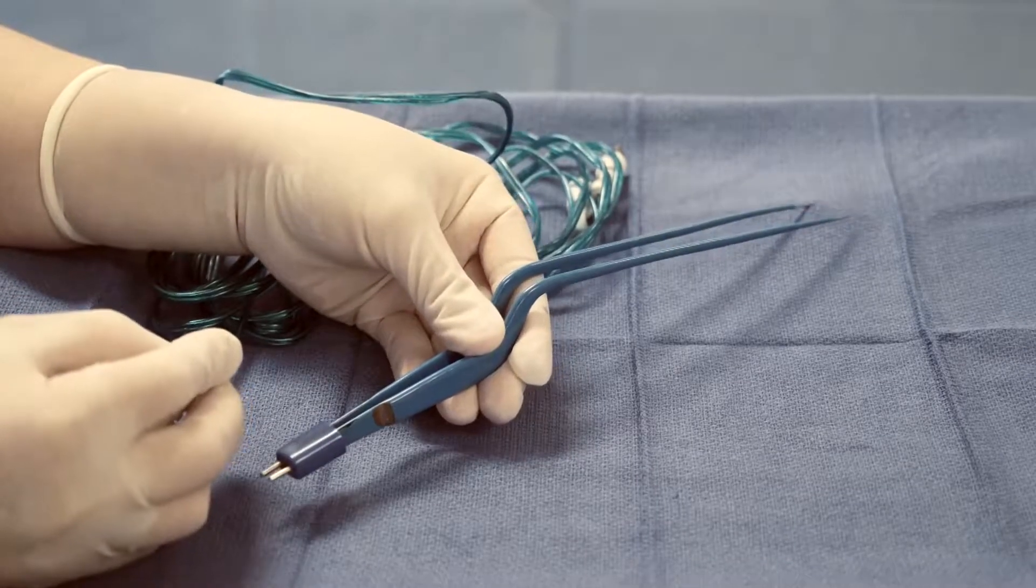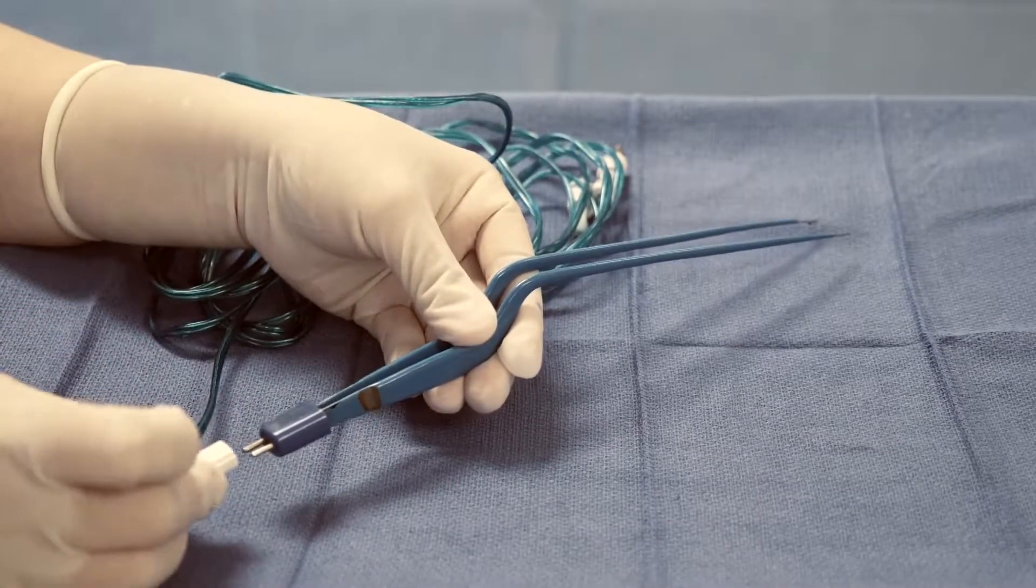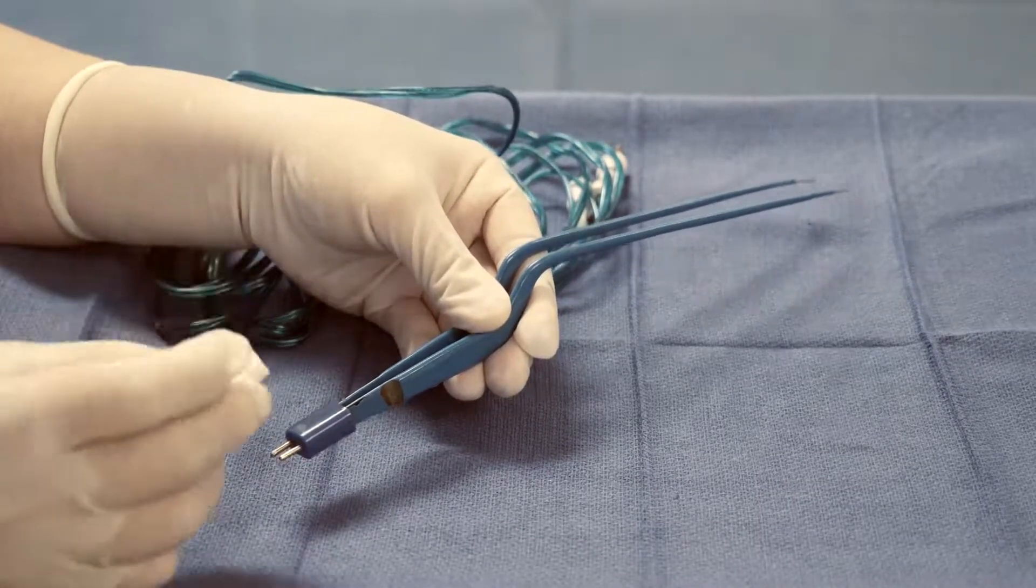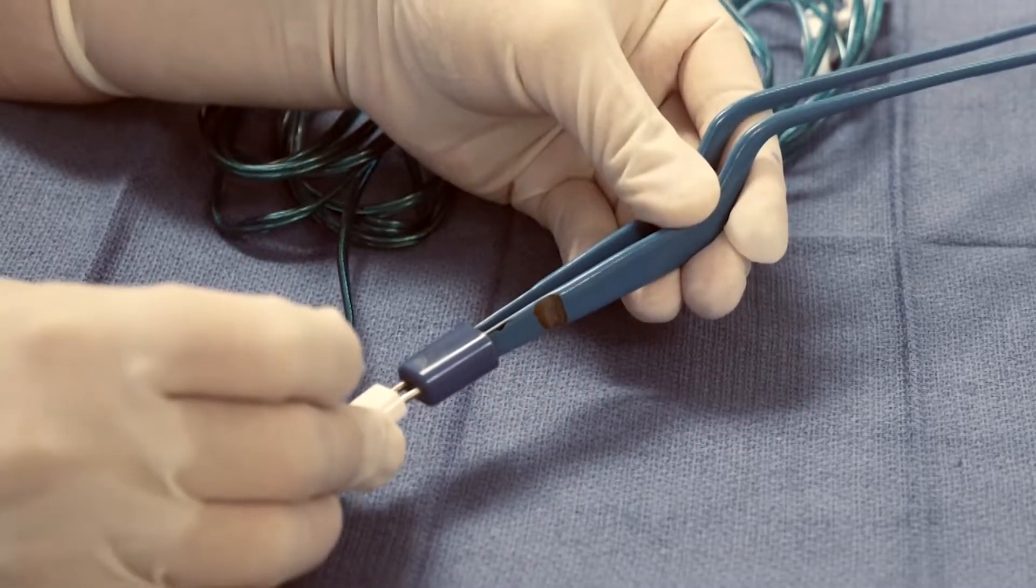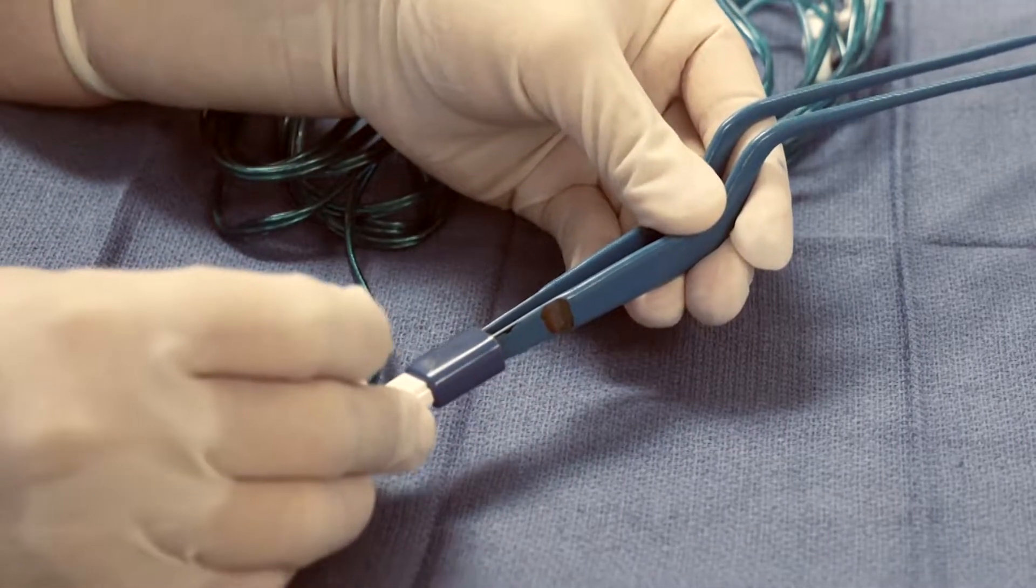The bipolar cord is attached at the tip here. This end will then be passed onto your circulating nurse, which becomes the unsterile part of the cord.